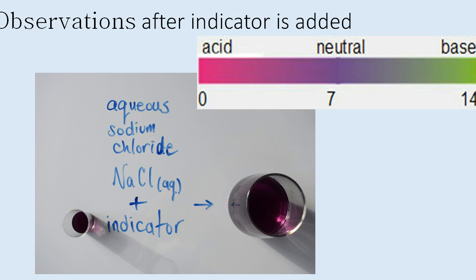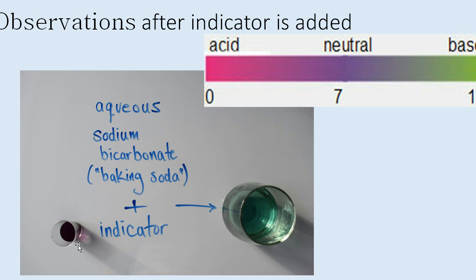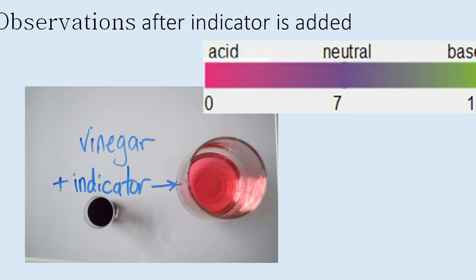Next, vinegar and the indicator — quite a nice, shocking color change. Next, we have aqueous sodium bicarbonate or baking soda plus the indicator. Here's the indicator on the left, thrown into the cup with the baking soda and water, and we get that color — pretty neat. Quite a shocking difference between the vinegar and sodium bicarbonate.